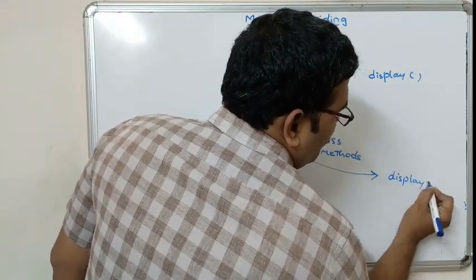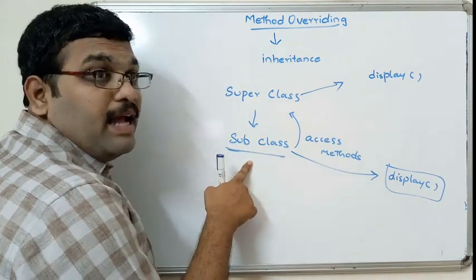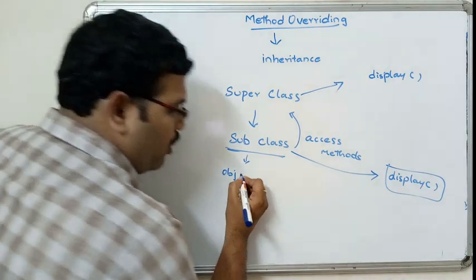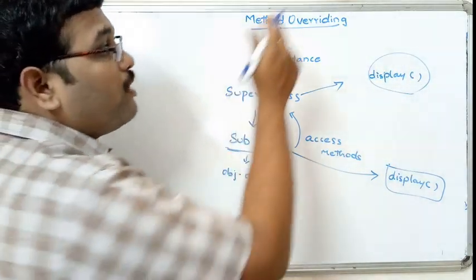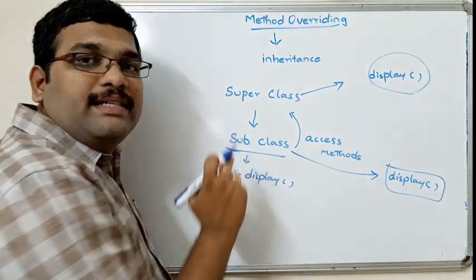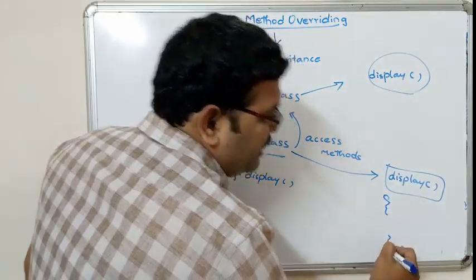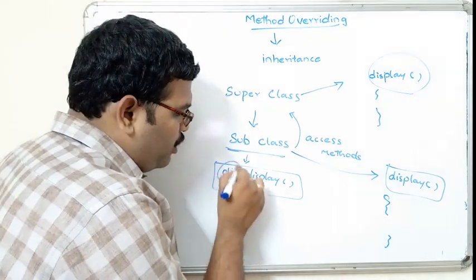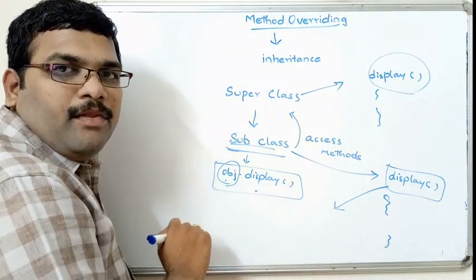In the absence of overriding, by creating an object for the subclass, that object can access the method of the superclass. For example, if you create an object for this subclass, object dot display will automatically access the display method of the superclass. But with overriding, the child class rewrites the same display method, so object dot display will execute the subclass version.